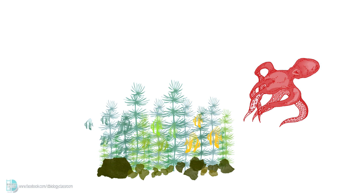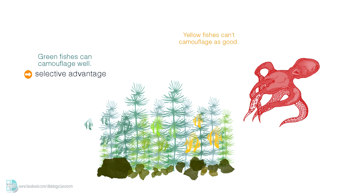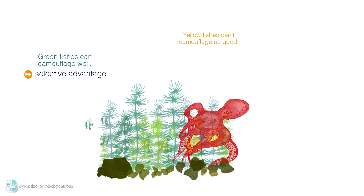Those fishes with green colored bodies can camouflage well. They can hide easily from the predator. They are said to have a selective advantage. Those with the body color from another extreme are not so lucky — they can't camouflage and are spotted easily by the predator. They are said to have a selective disadvantage. They will be killed more easily compared to their green friends.